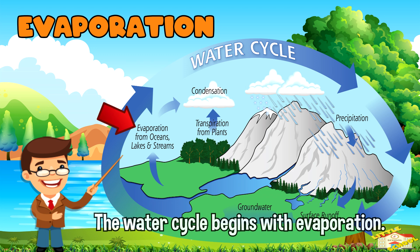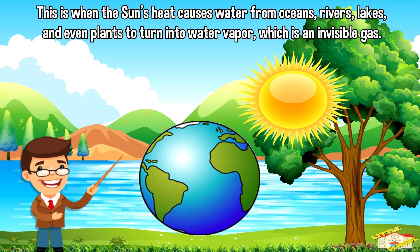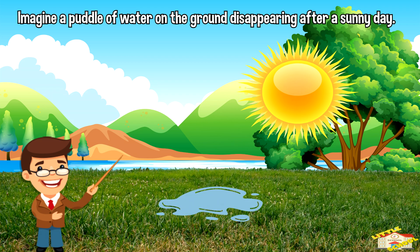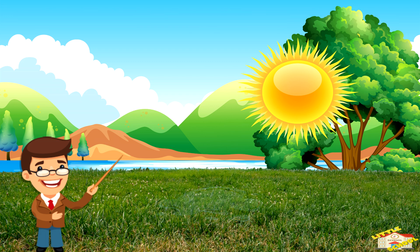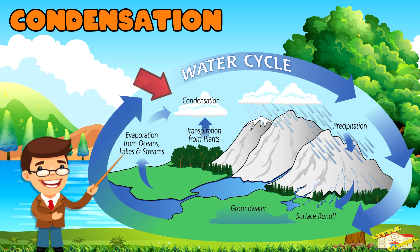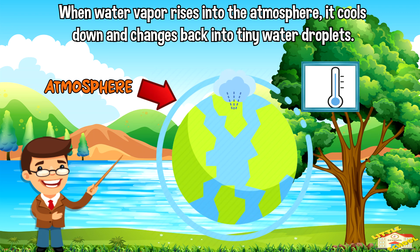Evaporation. The water cycle begins with evaporation. This is when the sun's heat causes water from oceans, rivers, lakes, and even plants to turn into water vapor, which is an invisible gas. Imagine a puddle of water on the ground disappearing after a sunny day — that's evaporation.